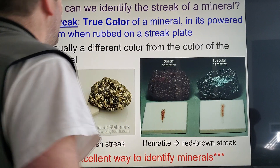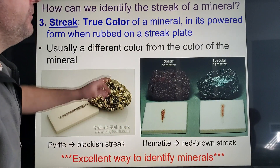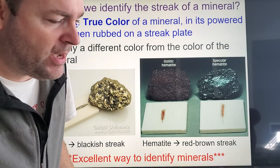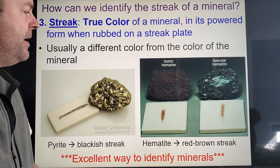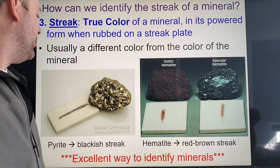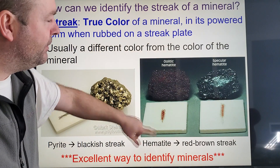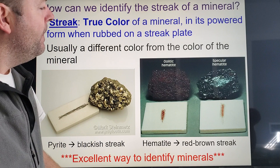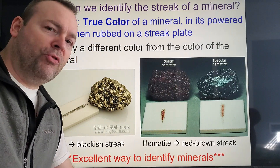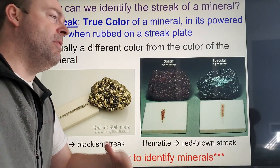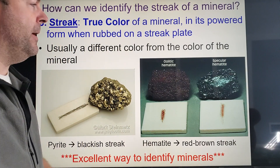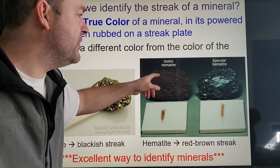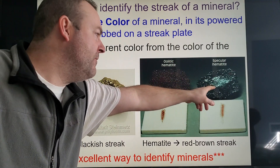Streak is kind of a funny name. It reveals the true color of a mineral — the color on the inside, not some random color on the outside. You take the mineral, rub it on a porcelain plate, and you get that internal powder. That powder is called the streak color, and you can look it up on a chart to help identify the mineral.